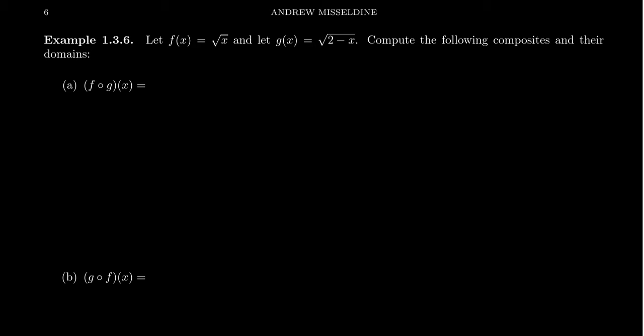So let's take two functions. We're going to take f of x to equal the square root of x, and g of x to equal the square root of 2 minus x.